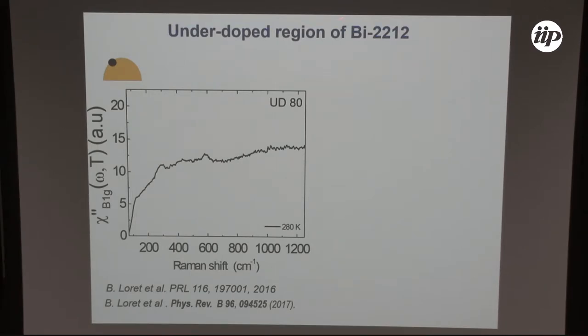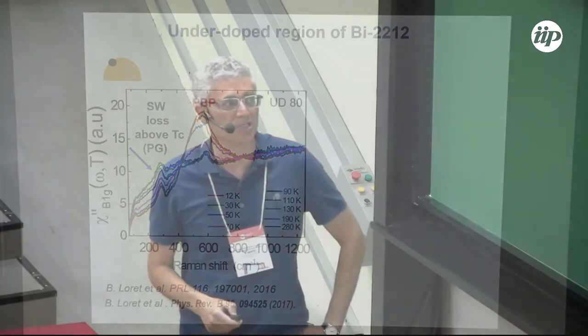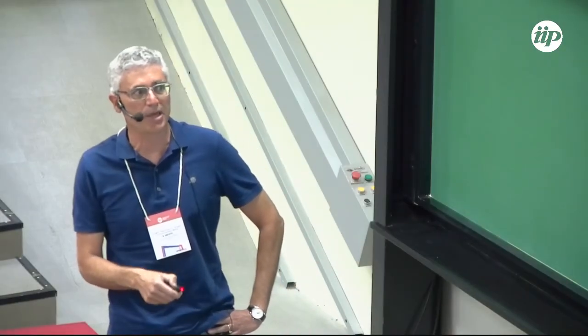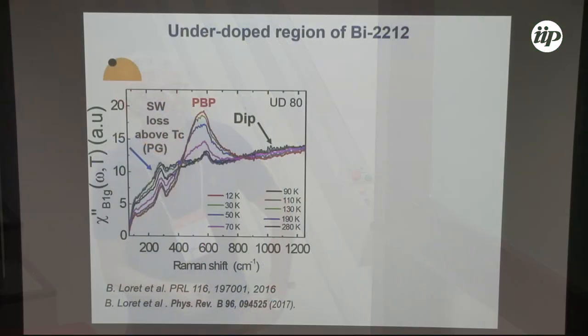Now turning to the antinodal region of Bismuth-2212. We still have a broad electronic background, but when we decrease temperature the slope decreases and gives rise to a depression — exactly the same depression seen in ARPES — which is the pseudogap in the normal state. When we enter the superconducting state, the loss of spectral weight is enhanced, with redistribution to high energy forming the pair-breaking peak. Looking at the superconducting state relative to the normal state, we observe a feature called the dip.